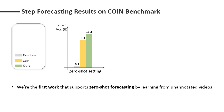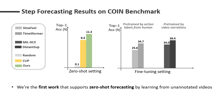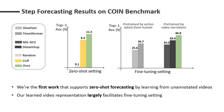Now let's take a look at zero-shot forecasting. We include random guess and CLIP as baselines, and our model outperforms these baselines by a clear margin. For the fine-tuning setting, we include baselines pre-trained by action labels and models pre-trained by video narrations. Our model outperforms all baselines by a significant margin. These strong results are attributed to our procedure-aware video representation.